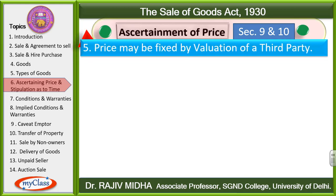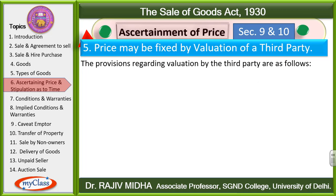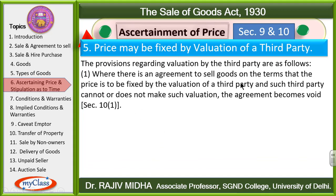Price may be fixed by valuation of a third party. The provisions are: where there is an agreement to sell goods on the terms that the price is to be fixed by valuation of a third party, and such third party cannot or does not make such valuation, the agreement becomes void.